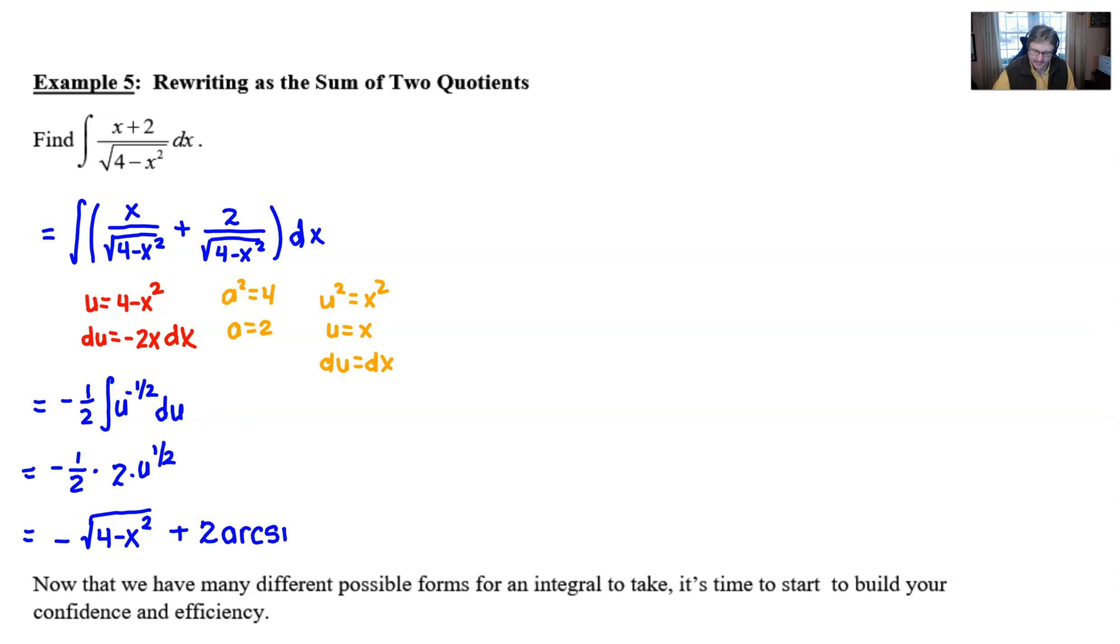So we can jump right to the answer and we put u over a, or x over 2, here in that spot. And there you go, your solution to example 5. Pretty standard rewrite as the sum of two quotients.